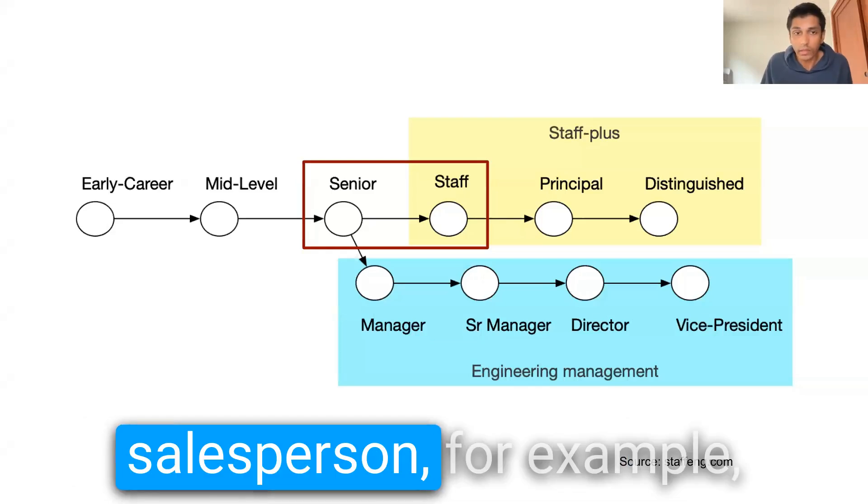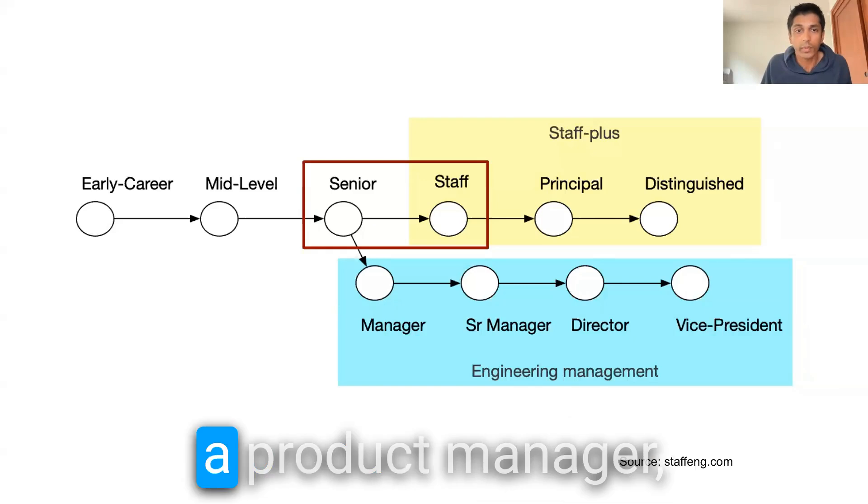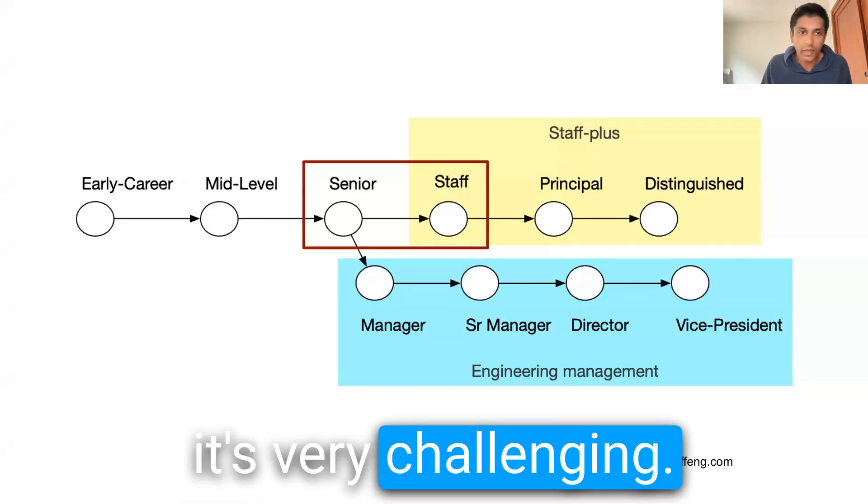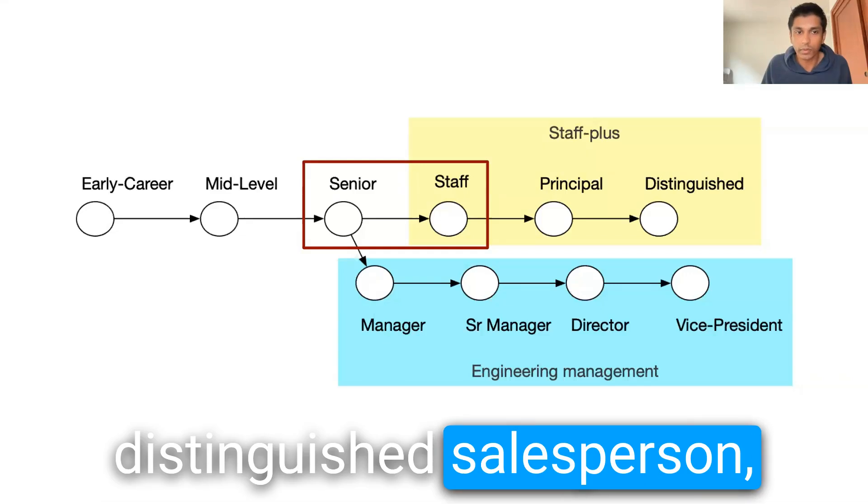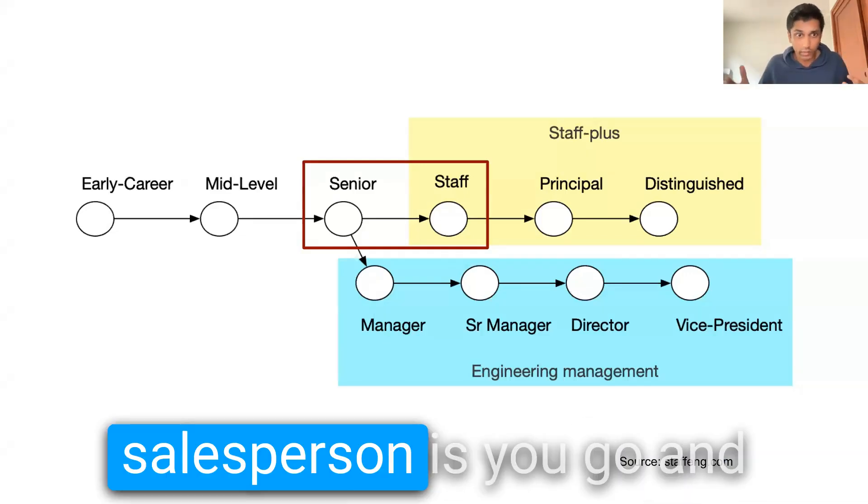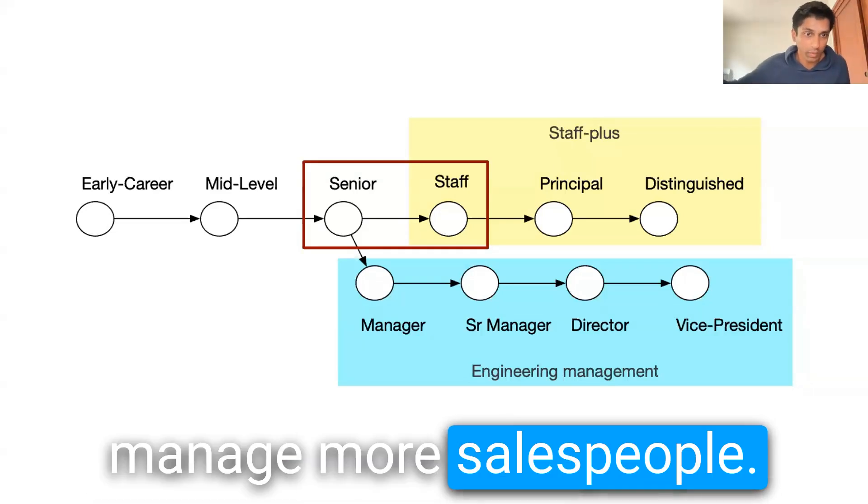If you think about a salesperson, for example, or maybe even like a product manager, it's very challenging. But I don't think there's such a thing as a distinguished salesperson. The way you accrue more compensation and more scope as a salesperson is you go and manage more salespeople.